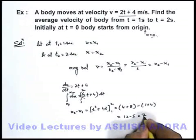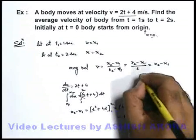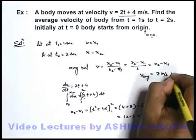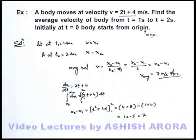So here the value of x₂ - x₁ is 7, so we can simply state the average velocity is 7 meters per second, which is the answer to this question.